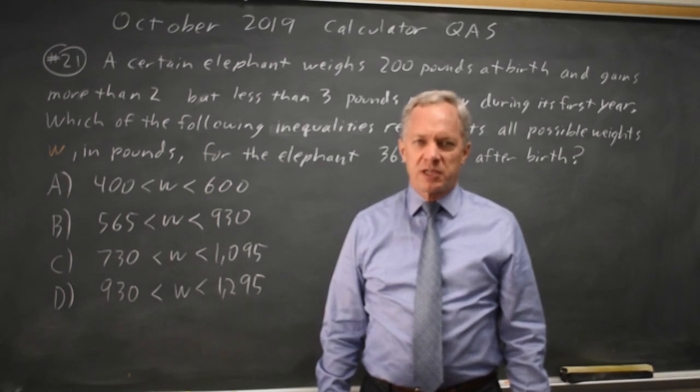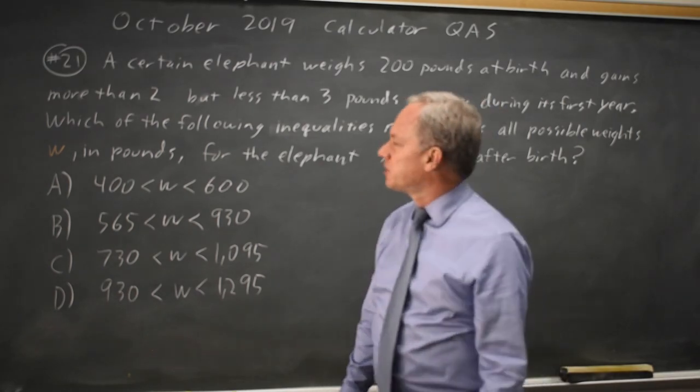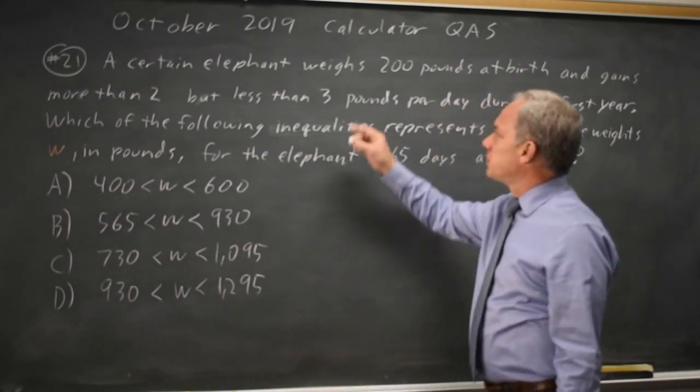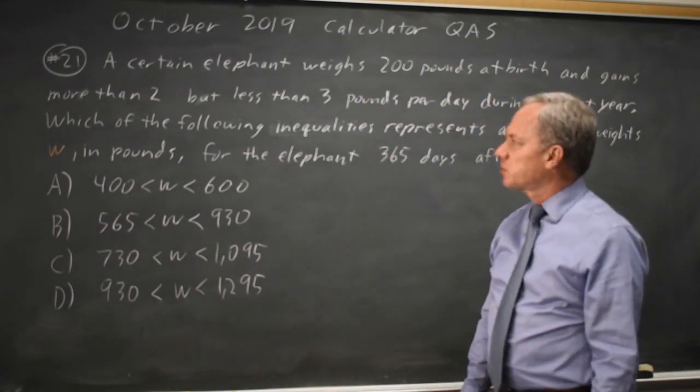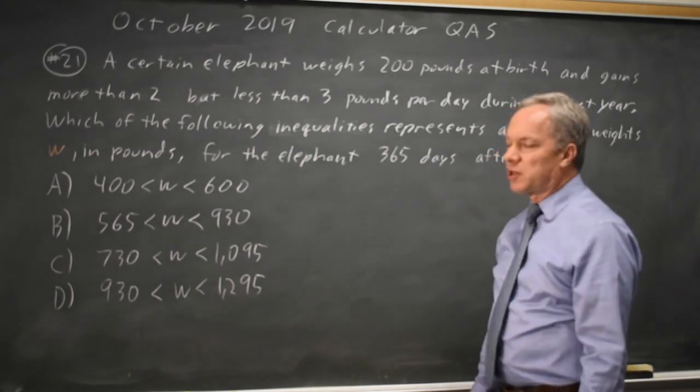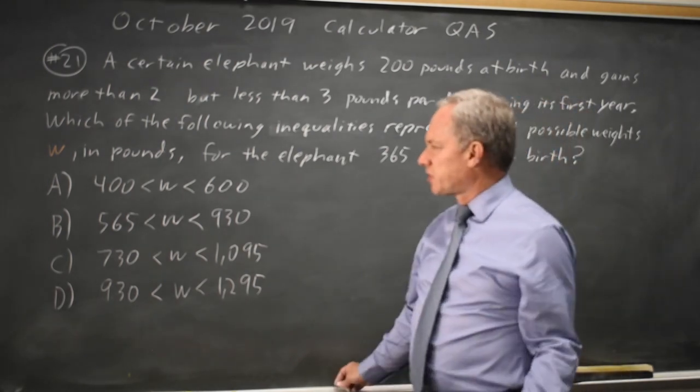This is question 21 from the Calculator section, October 2019. An elephant weighs 200 pounds at birth and gains between 2 and 3 pounds per day during its first year. Which of the following is its weight after 365 days?